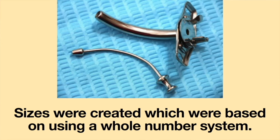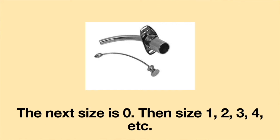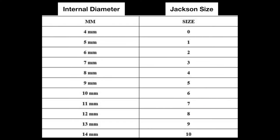Sizes were created which were based on using a whole number system. The smallest size is a size 00, the next size is 0, then size 1, 2, 3, 4, etc. The largest size is a size 10. The Jackson sizes are set up to correlate with a specific internal diameter of the tracheostomy tube.